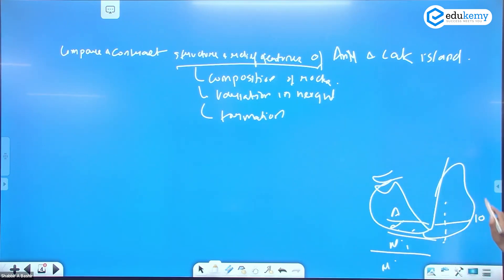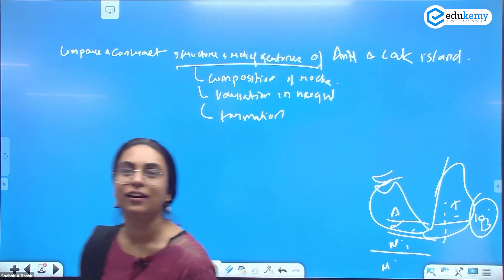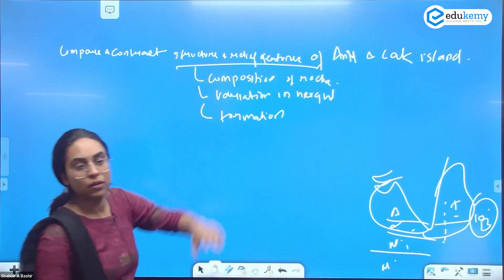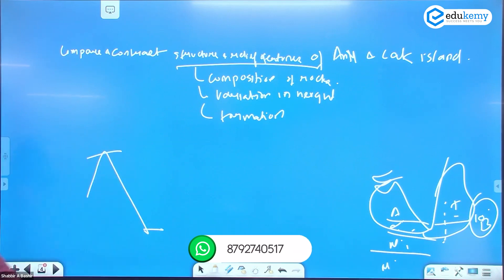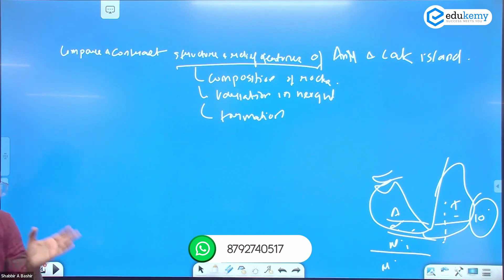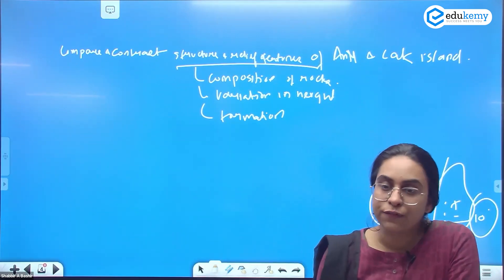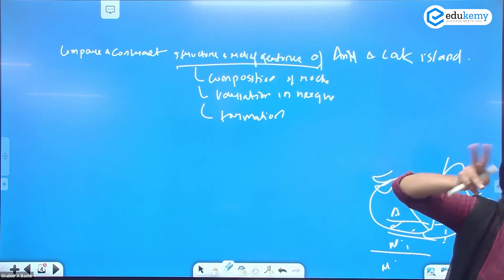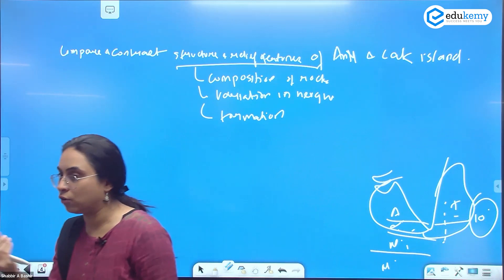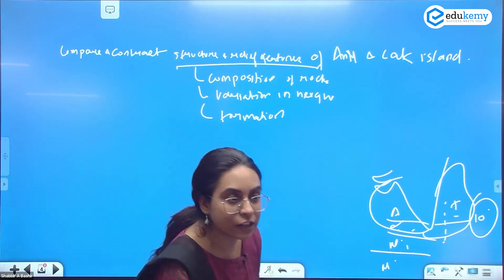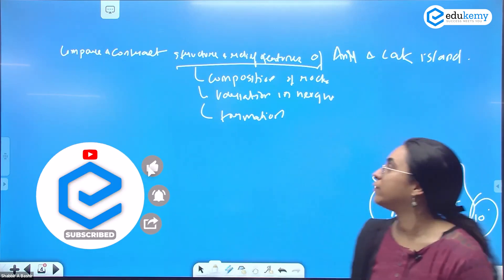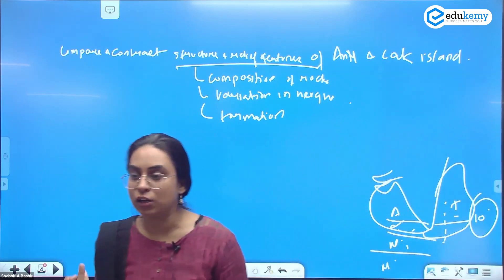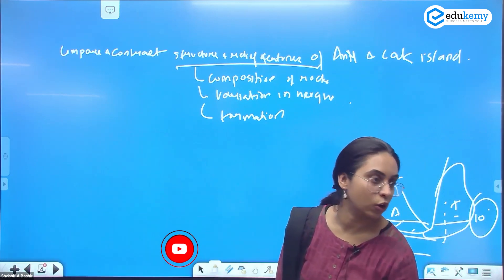Both island groups are evidence of plate tectonics — the Indian plate and the Burmese plate. The soil in Lakshadweep is fine. When comparing structure and relief features, consider: composition of rocks — Andaman-Nicobar has volcanic rocks, while Lakshadweep has calcite-based rocks (coral is made of calcium). In terms of relief, Andaman-Nicobar is more mountainous in nature, as you may have studied in your NCERT. The formation of the two island groups is also very different.